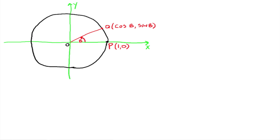Then we're going to draw an angle — we're going to call this angle B. Angle B gives us an ordered pair out here on the unit circle that we're going to call point Q, and it has ordered pair (cos B, sin B), just from the definition of the trig functions from a few videos back.